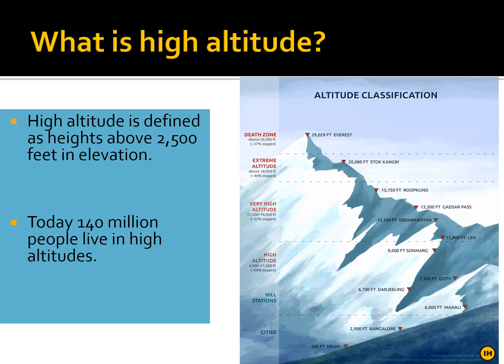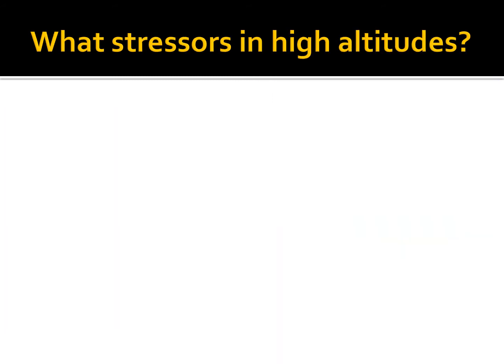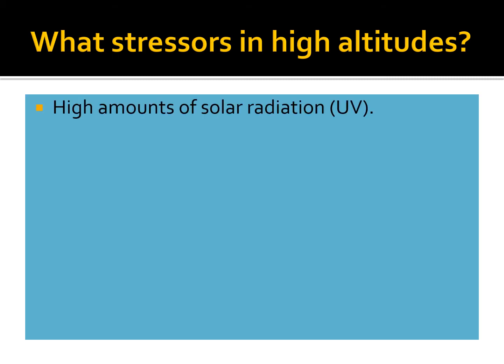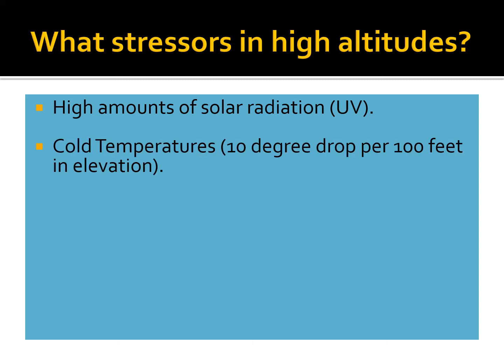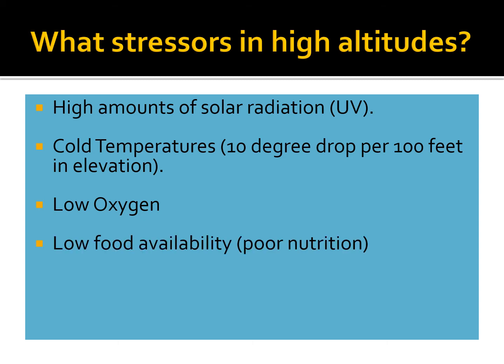Today roughly 140 million people worldwide live in what would be considered high altitude environments. The stressors human populations deal with at high altitudes include high amounts of solar radiation and UV radiation, very cold temperatures — there is a 10-degree drop in temperature per 100 feet of elevation — low oxygen levels, low food availability since not many agricultural products can grow at high altitudes, high winds, and very low levels of humidity.